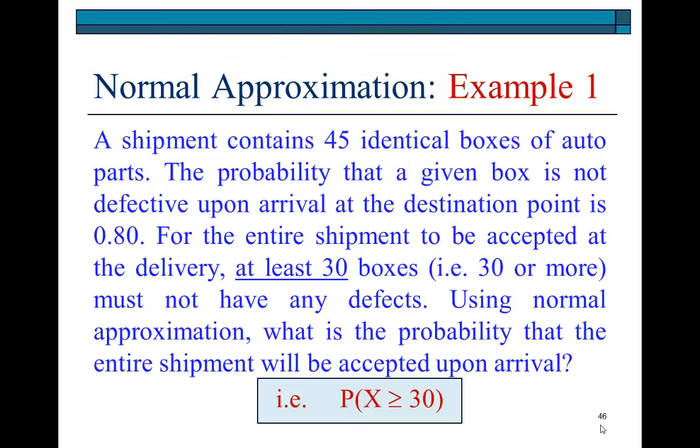So, here's a quick example. It says a shipment contains 45 identical boxes of auto parts. The probability that a given box is not defective upon arrival at the destination point is 0.8. For the entire shipment to be accepted at the delivery point, at least 30 boxes, meaning 30 or more, must not have any defects. Using normal approximation, what is the probability that the entire shipment will be accepted upon arrival.